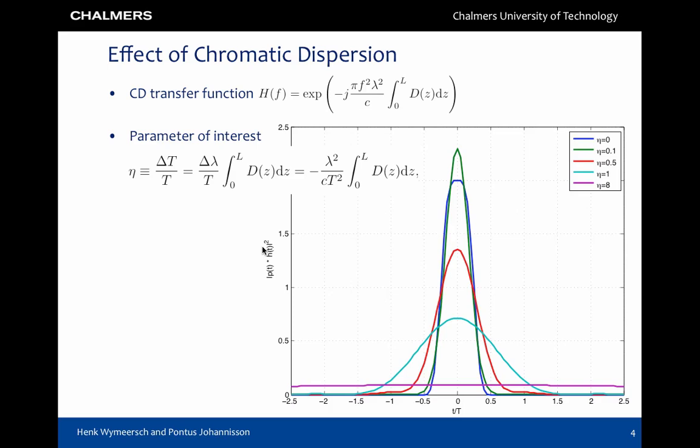The chromatic dispersion estimator attempts to determine eta, after which an inverse filter can be applied. For reliable operation, the residual dispersion after this filter should correspond to a value of eta well below 1.